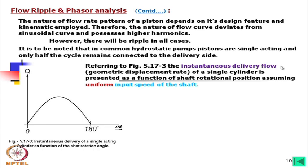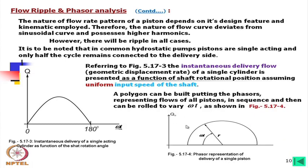Instantaneous delivery flow — the geometric displacement rate of a single piston — is presented as a function of shaft rotational position, assuming uniform input speed. This can be represented as a phasor: r·sin(θ), where r is the arm amplitude and θ is the shaft angle. Drawing all pistons' phasors together produces a polygon.